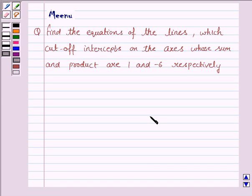Hello friends, let's discuss the following question. It says, find the equations of the lines which cut off intercepts on the axes whose sum and product are 1 and minus 6 respectively.